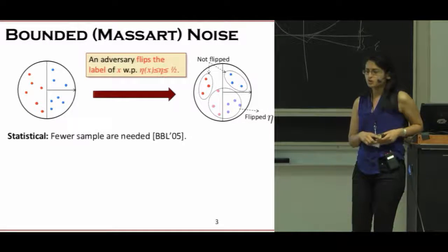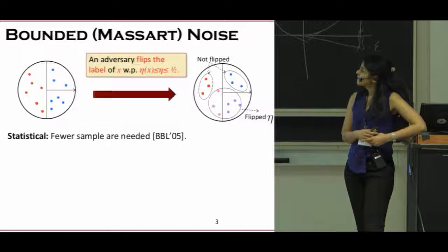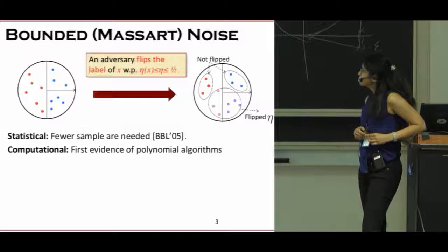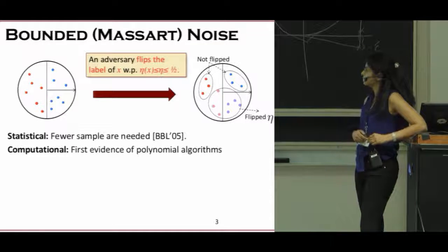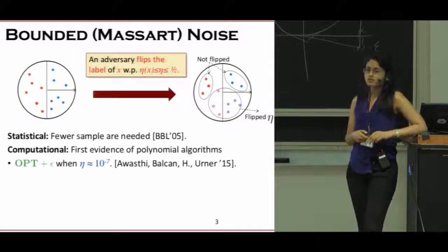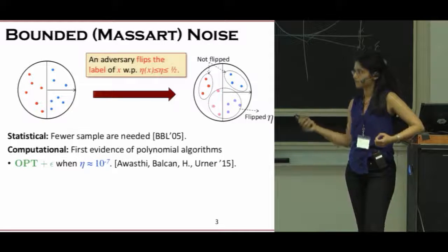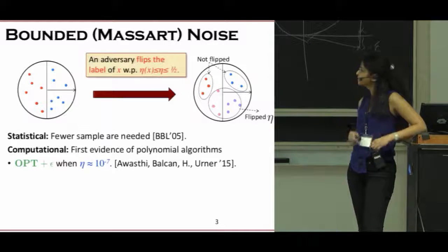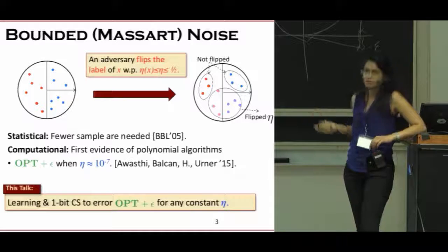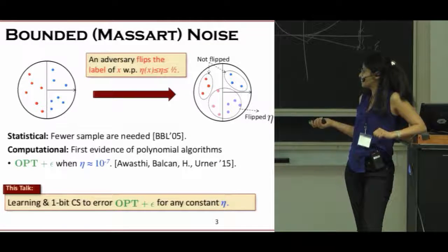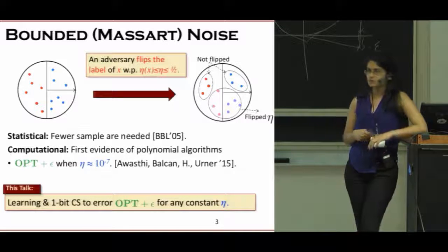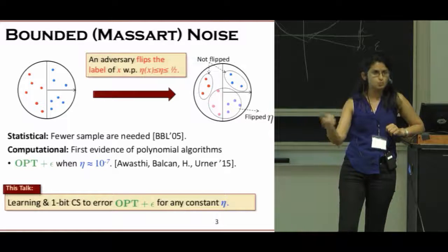This noise model is known to have very nice statistical properties, but from the computational point of view, it's been quite elusive. First evidence that there is a polynomial algorithm was an earlier work of myself with Abassi, Balkan, and Erner, that showed that when the noise is very small, you can indeed have efficient algorithms for this recovery. So in this talk, we're going to go beyond this very small level of noise and try to tolerate any constant noise, and also do this in a one-bit compressed sensing fashion, so the number of samples we need is polynomial in the sparsity.